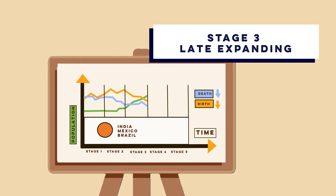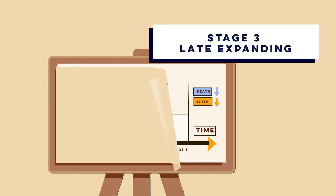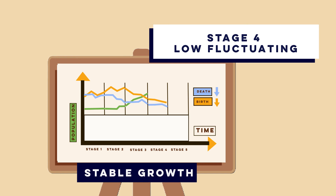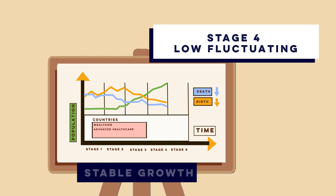Stage 4 is low fluctuating. Both birth and death rates are low and population growth is stable. This is because countries are wealthier, healthcare is advanced and women have more career opportunities, leading to smaller families. Many high income countries like the USA, the UK and France are in this stage.